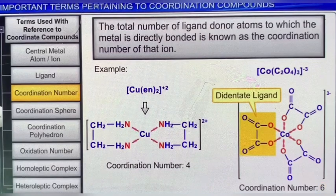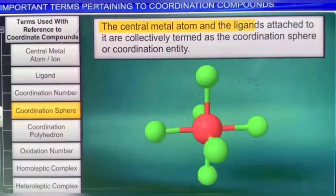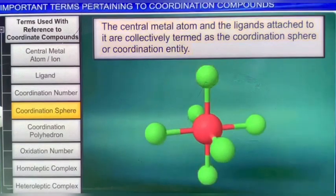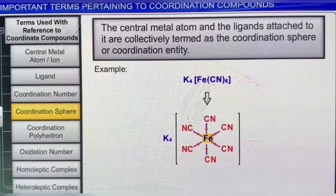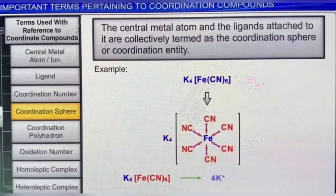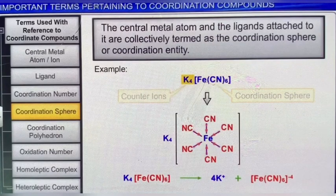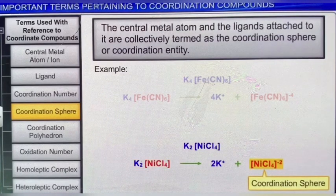Coordination entity or coordination sphere is a common term used with reference to complexes. The central metal atom and the ligands attached to it are collectively termed as the coordination sphere or coordination entity. For example, in the complex [Fe(CN)₆], iron along with the six cyanide ligands is the coordination sphere. The coordination sphere is written inside square brackets, while the ionizable groups are written outside the bracket and are called counter ions. For example, in the complex K₂[NiCl₄], the coordination sphere is [NiCl₄]²⁻, and the counter ion is potassium.